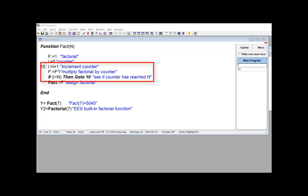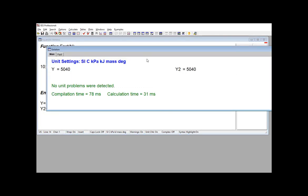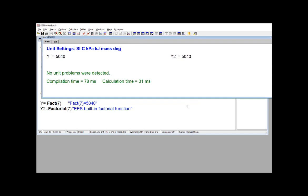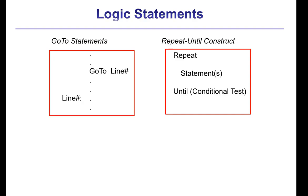So you can see what I've made here is a little loop that's going to keep looping until i is equal to n, at which point I've calculated the factorial of the number. We can test this fact function and compare it to the value that's returned by the built-in factorial function in EES, and you can see that both give the same number. Looping within functions and procedures can be implemented in this way, if-then-else with go-to statements.